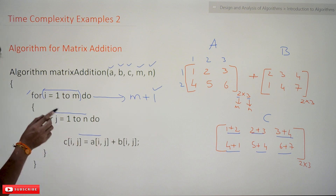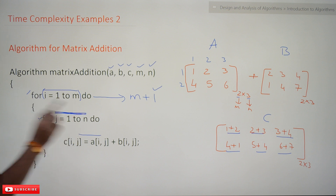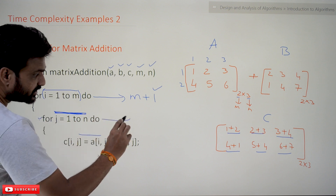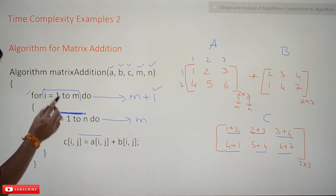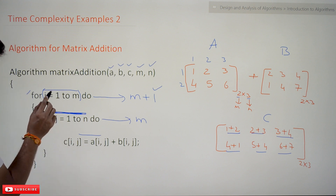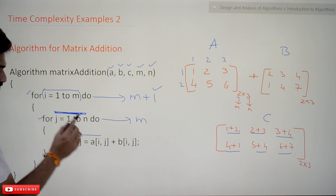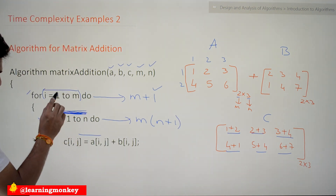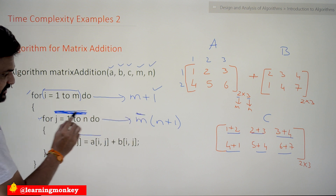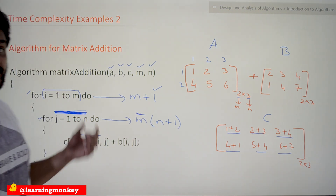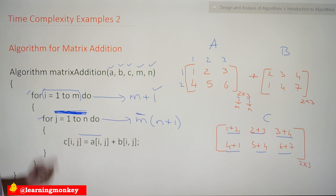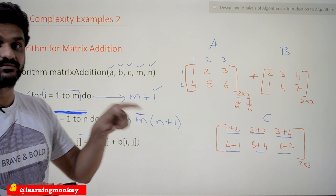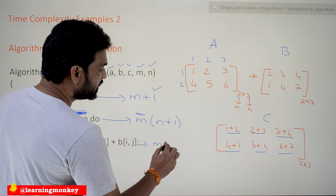Every time we come into the outer loop, the inner loop line of code will get executed n plus 1 number of times. We come into the outer loop m times, and each time the inner loop condition executes n plus 1 times — so that line costs m into (n plus 1). The assignment line inside both loops executes m into n number of times.